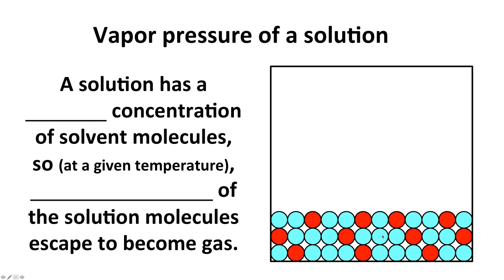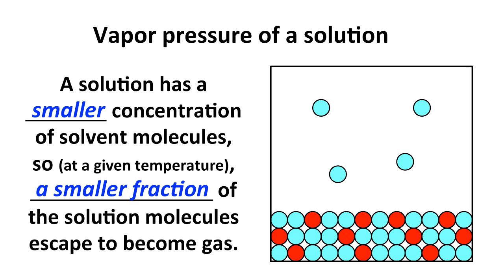If instead of a pure liquid we have a solution, then we have a smaller concentration of solvent molecules — they're not 100% solvent. Maybe 95% of the molecules might be solvent molecules, therefore we have a smaller number or smaller fraction of the solution molecules that can escape to become gas. We're assuming our solute is a non-volatile solute — in other words, it does not turn into a gas — and because we have a smaller fraction of the total molecules that can become gas, we have a lesser amount of molecules escaping, a smaller fraction, and we have a smaller pressure of that gas.